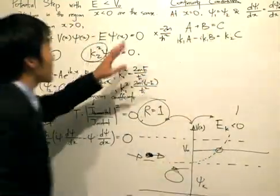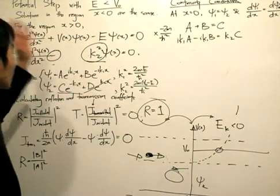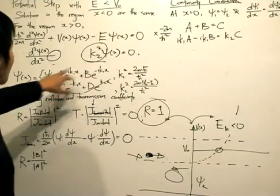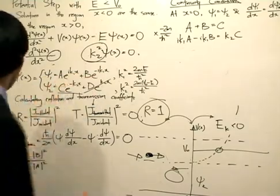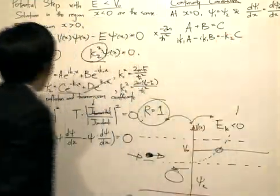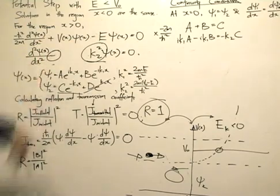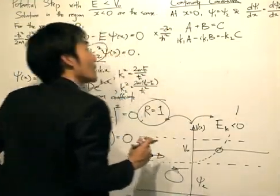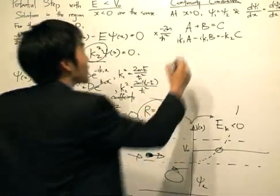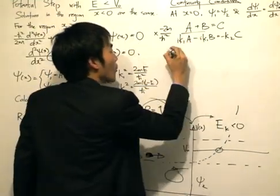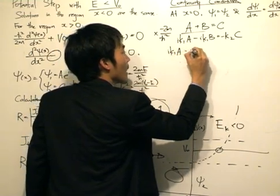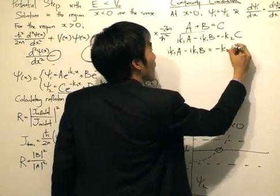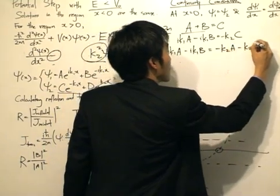The first continuity condition is obtained by substituting x equals zero, giving one for all the exponentials. For the second, we differentiate, so the argument is brought down — with a minus sign here. Rearranging by substituting a plus b in for c, we get: ik₁a minus ik₁b equals minus k₂a minus k₂b.